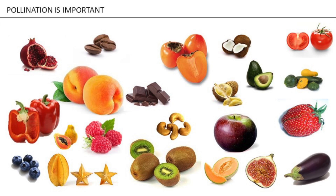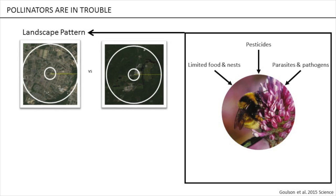They're also threatened. There's a suite of drivers that threaten these important pollinators, and I would argue that they operate at two distinct scales. At landscape scales, we see that the pattern of habitat patches in these landscapes can control the distribution of food, nest sites, or the flow of parasites and pathogens.